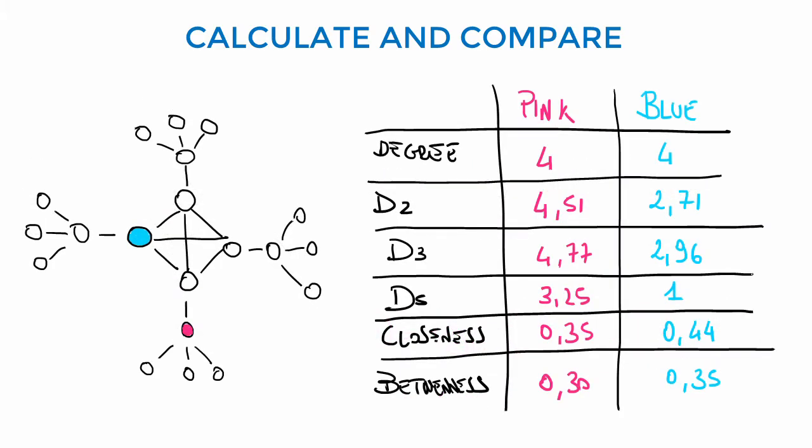In the table, we see a comparison with also other metrics. Pink and blue have the same degree equal to 4. However, all distinctiveness centrality metrics indicate that the pink node is more important than the blue one.